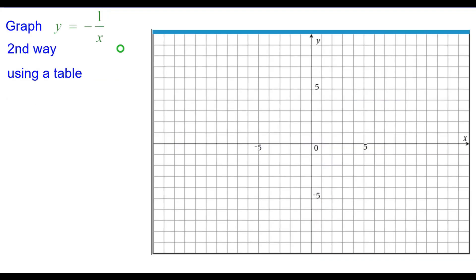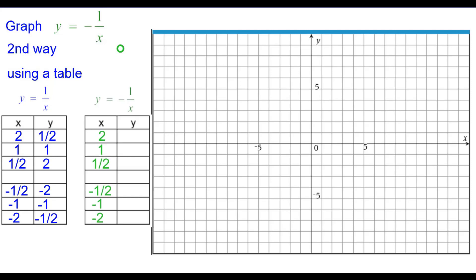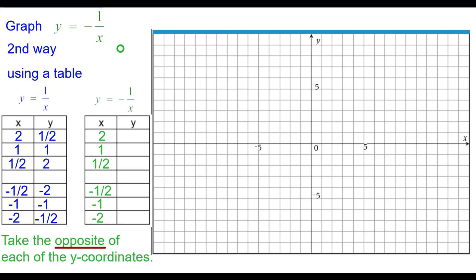The second way, we're going to use a table. For our table, we're going to use these six values that are traditionally on the y equals 1 over x graph. And then we're going to take the opposite of each of the y-coordinates.